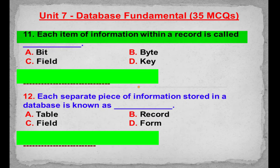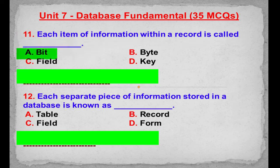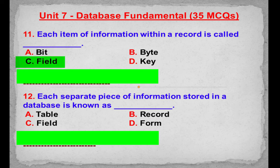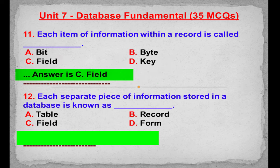MCQ number 11: Each item of information within a record is called. Option A: Bit. Option B: Byte. Option C: Field. Option D: Key. Correct answer is Option C: Field.